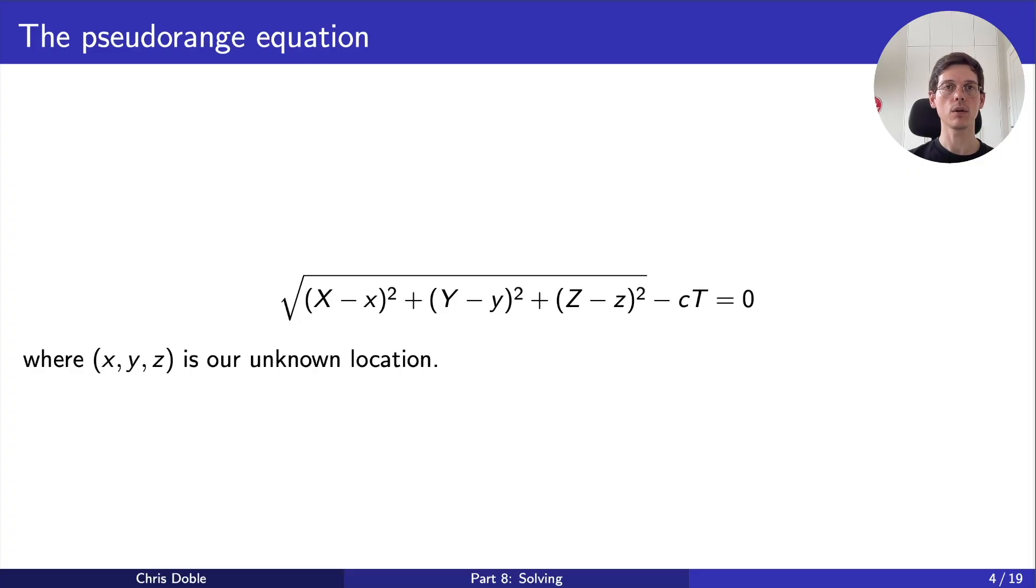The difference between our clock and the satellite's is called our clock bias, which we'll denote lowercase t. We can update the equation to account for this. This is called the pseudorange equation, and if we can solve it for lowercase x, y, z, and t, we'll know our location and clock bias.